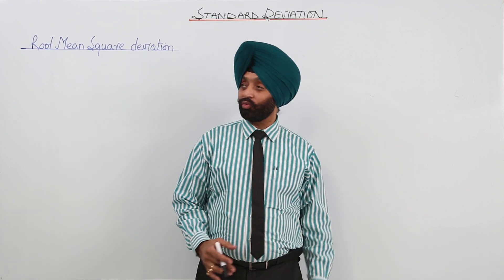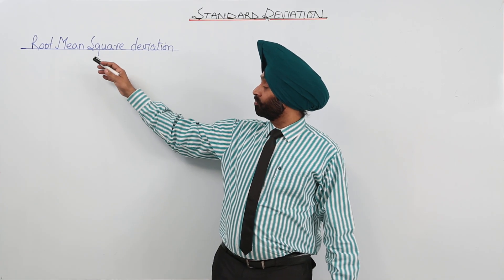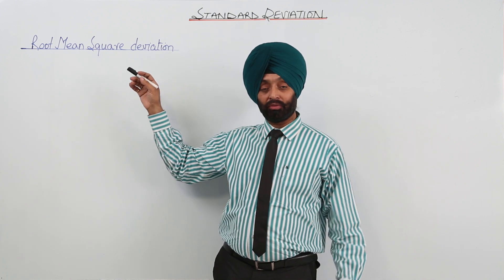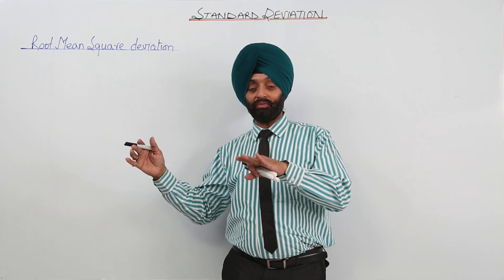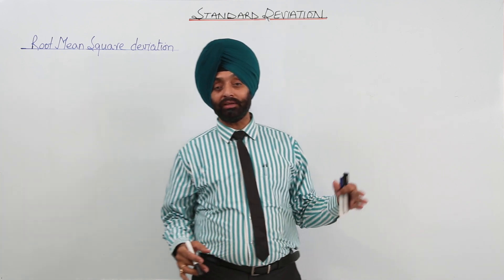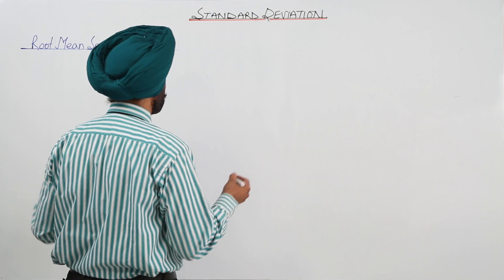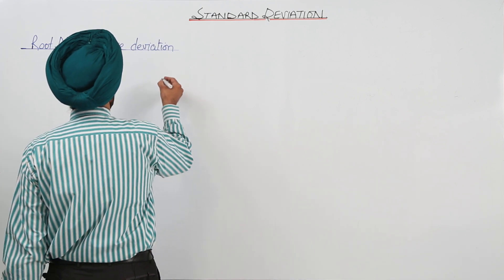Now, going for the standard deviation, let's first go for a definition for the root mean squared deviation, because from the root mean squared deviation we are going to get variance and standard deviation. So, just writing a very small definition about the root mean squared deviation now.